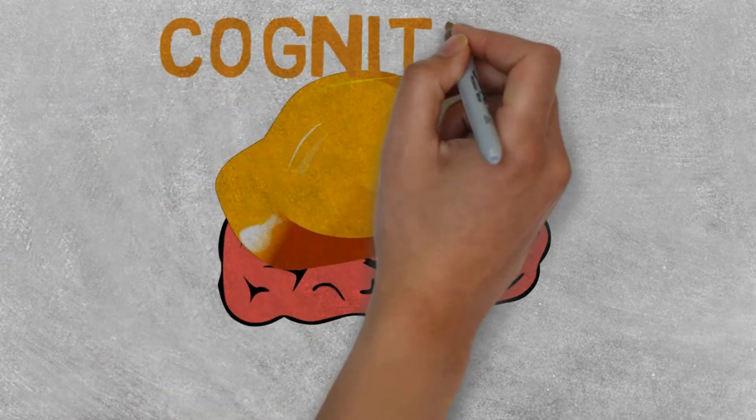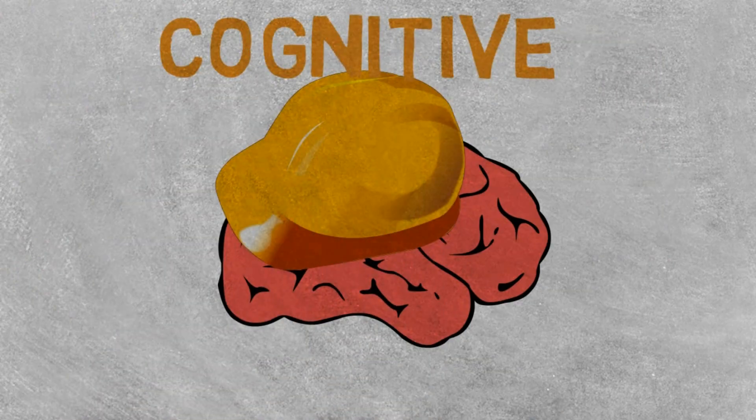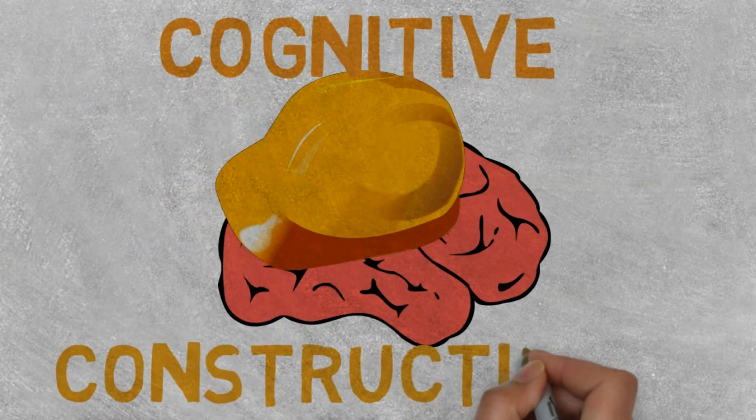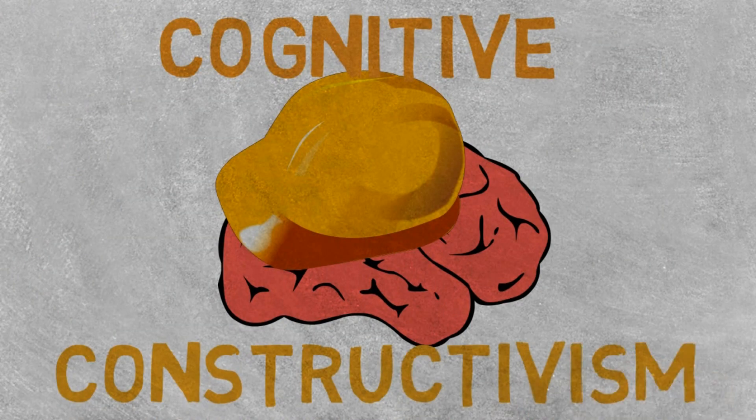So today I went over Piaget's cognitive constructivist theory of learning. I covered assimilation, accommodation, equilibration, and schemata, as well as a few ways to apply his theory. Thank you all for watching, and do me a favor and have a good day.